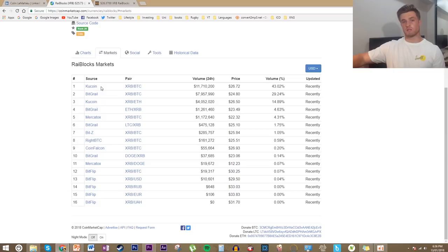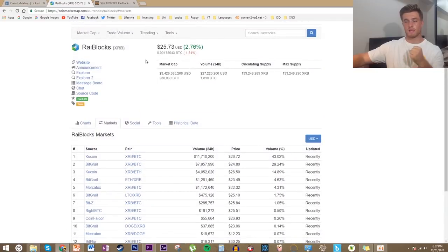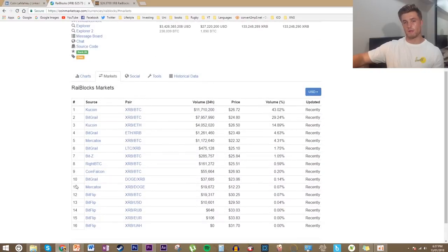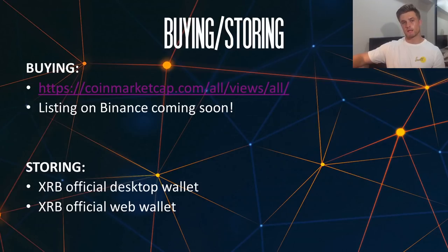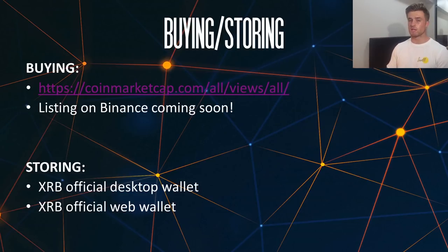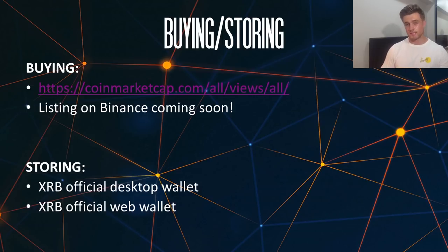KuCoin, although not a huge exchange right now, is growing rapidly and getting a lot of recent attention, just like Ryblox. Also worth noting — Ryblox has just won the community coin of the month vote on Binance, so they will be adding an XRB pair to Binance. I'm sure we're going to see some interesting things once that goes live given how large and liquid Binance is. The lack of exchanges is probably one of the things holding XRB's price back at the moment, but we should see more exchanges in the future.